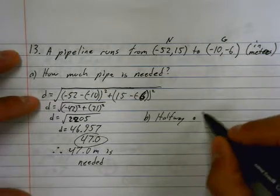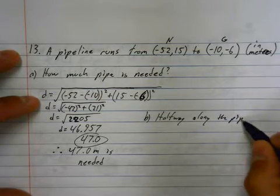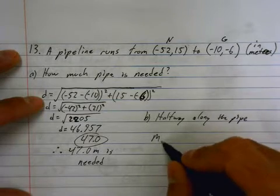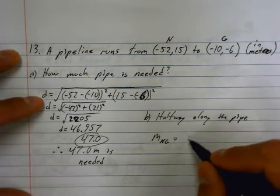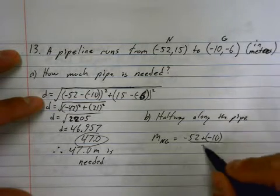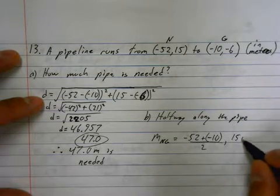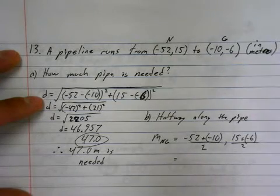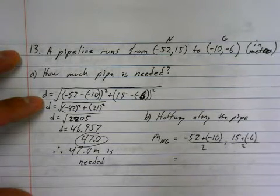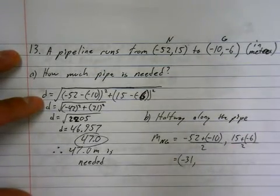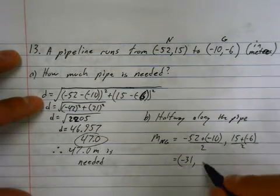Okay, halfway along the pipe. They are going to place something halfway along the pipe. Where is halfway along the pipe? Well, find the midpoint. Midpoint of NG, in this case, is negative 52 plus negative 10, divide by 2. Just add the X's and add the Y's. 15 plus negative 6, divide by 2.